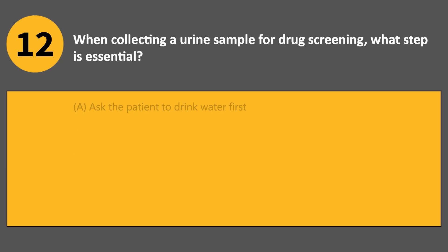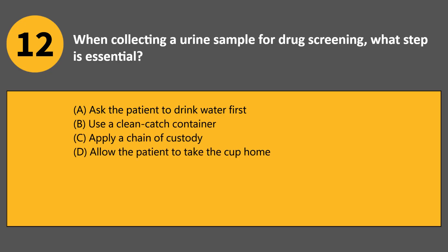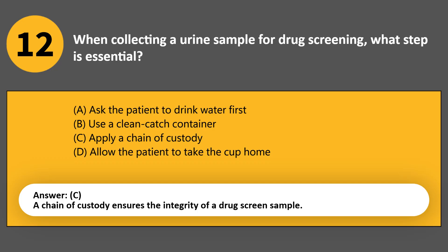When collecting a urine sample for drug screening, what step is essential? A. Ask the patient to drink water first. B. Use a clean catch container. C. Apply a chain of custody. D. Allow the patient to take the cup home. Answer C. A chain of custody ensures the integrity of a drug screen sample.